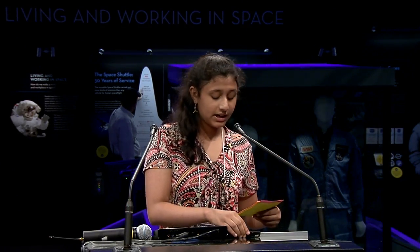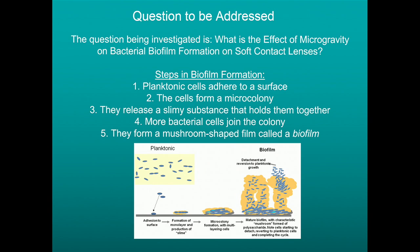The question being investigated is: what is the effect of microgravity on bacterial biofilm formation on soft contact lenses? Steps in the biofilm formation are: first, planktonic cells adhere to a surface; second, the cells form a microcolony; third, they release a slimy substance that holds them together; fourth, more cells start to join the colony; and fifth, they form a mushroom-shaped film called a biofilm.